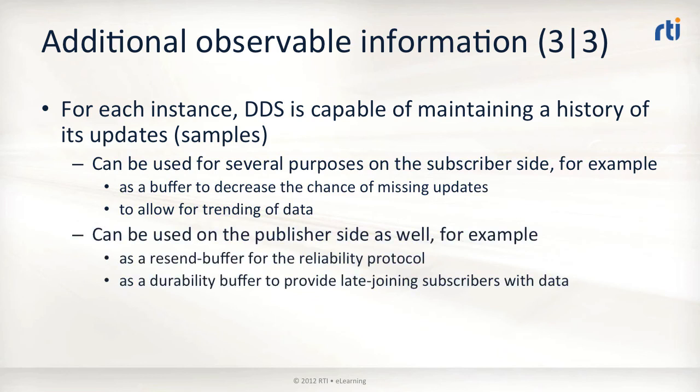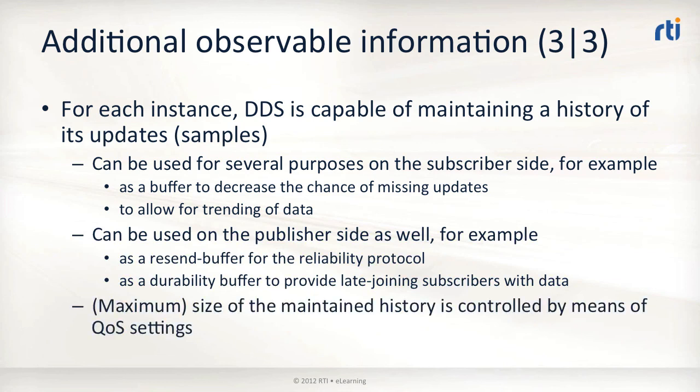On the publisher side, the purpose of history is more limited to distribution mechanisms — for example, for buffering samples to allow for better recovery by the reliability protocol, or for keeping data available for late joining observers. The size of the history can be configured at a fine-grained level using the corresponding QoS settings. The default behavior is not to maintain any history, just like databases do.